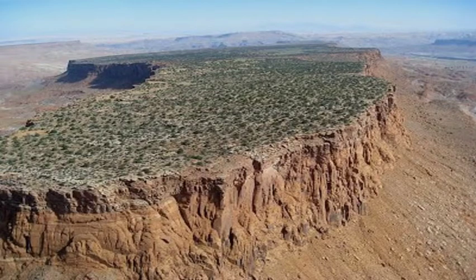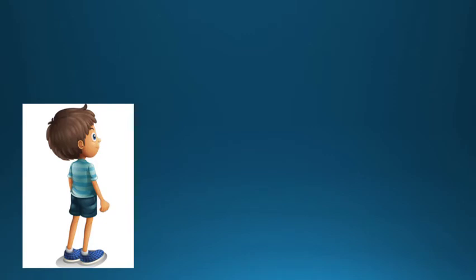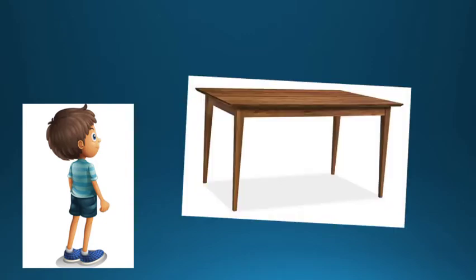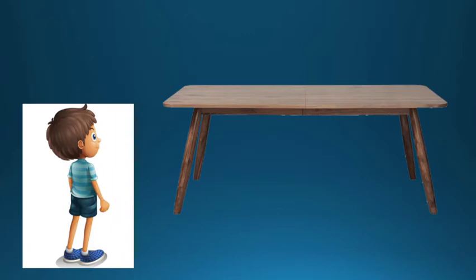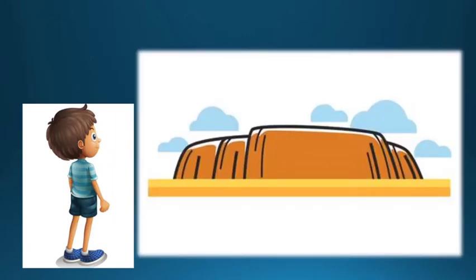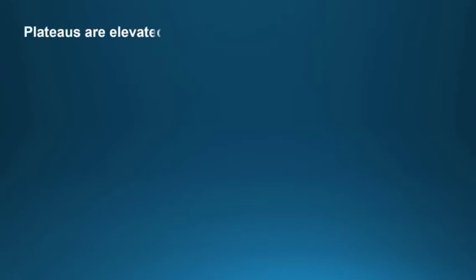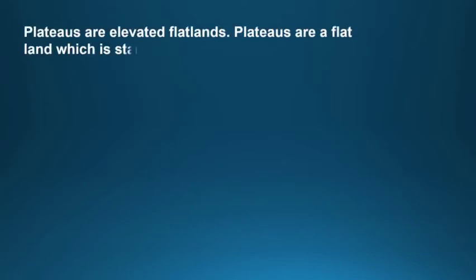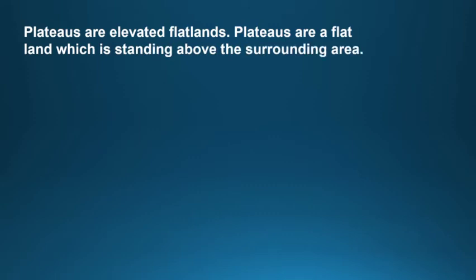First, we will start with plateaus. Please stand up and look at the table near you. Can you see how it is shaped? Now imagine if its legs are slightly slanting like this. This is the shape of a plateau, which is also known as table land. So we can say that plateaus are elevated flatlands — a flat land which is standing above the surrounding area.